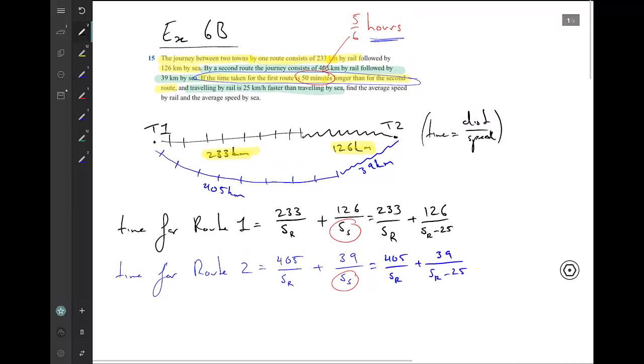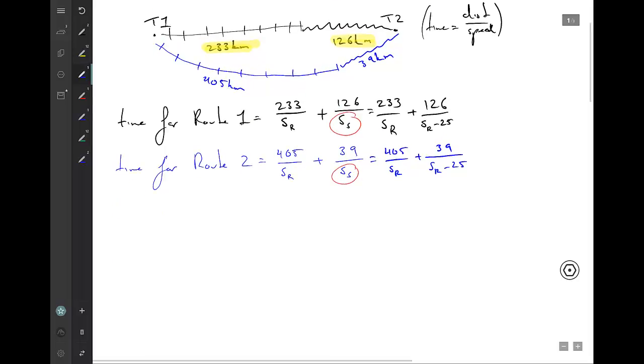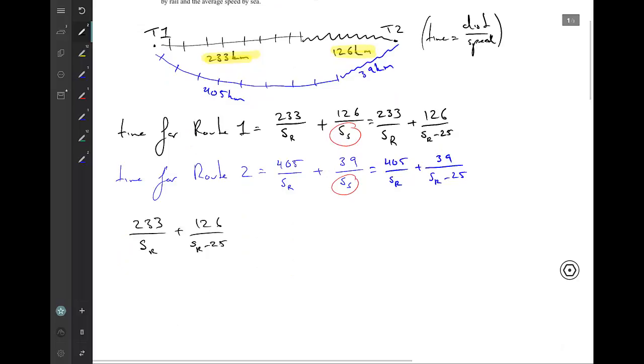So if we go back and have a look at this bit of information here, if the time taken for the first route is 5 on 6 hours longer than for the second route, we can write a single equation from which we can solve for SR. So 233 on SR plus 126 on SR minus 25 equals 405 on SR plus 39 on SR minus 25 plus that 5 on 6.